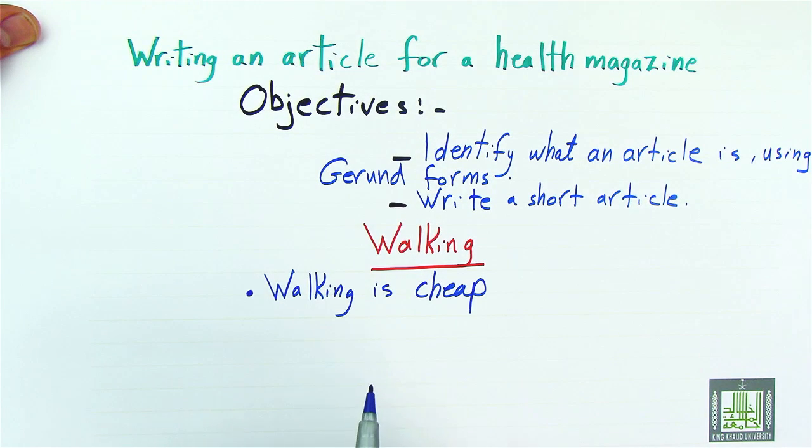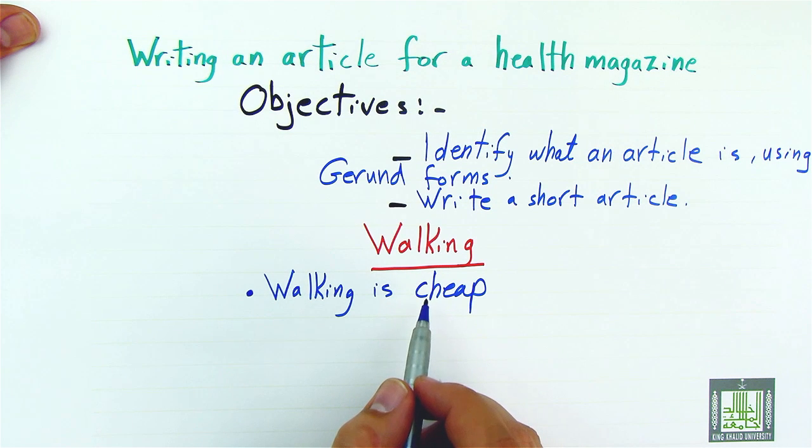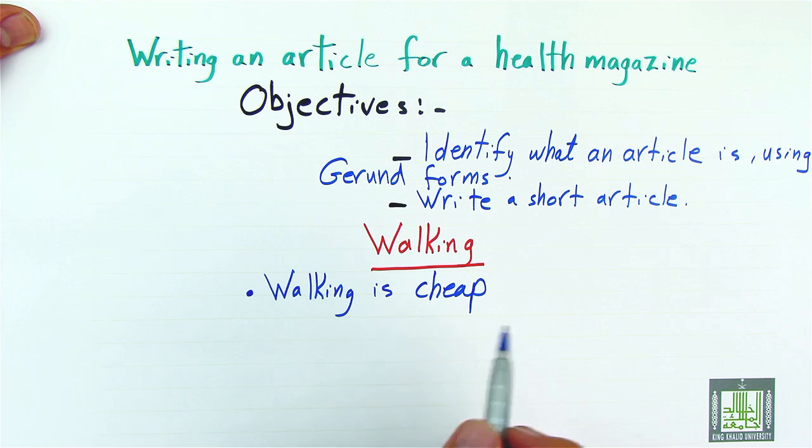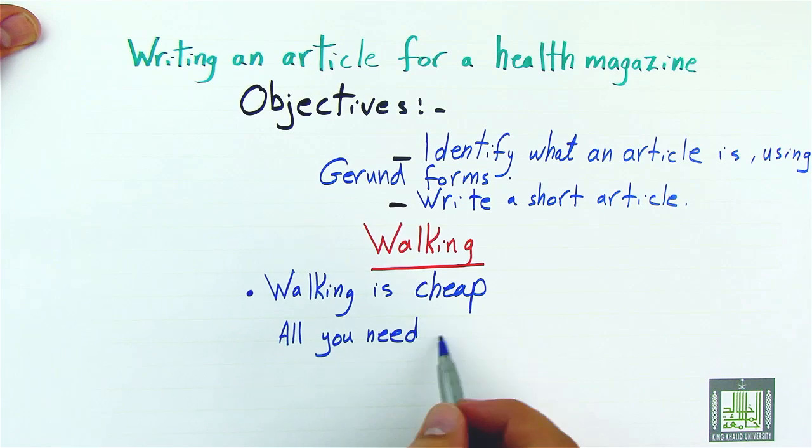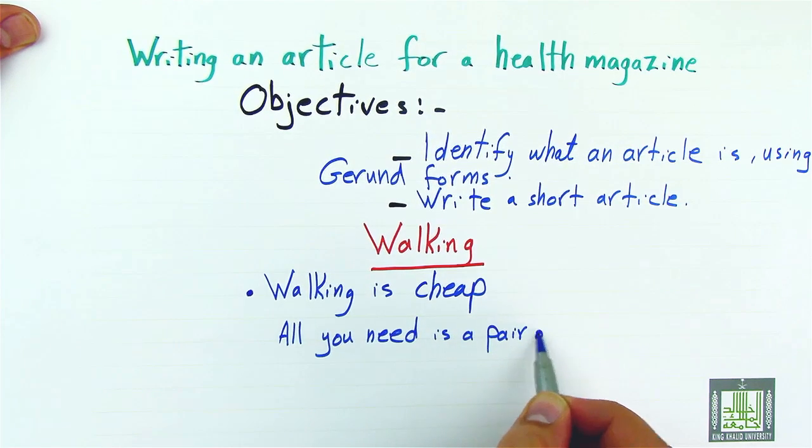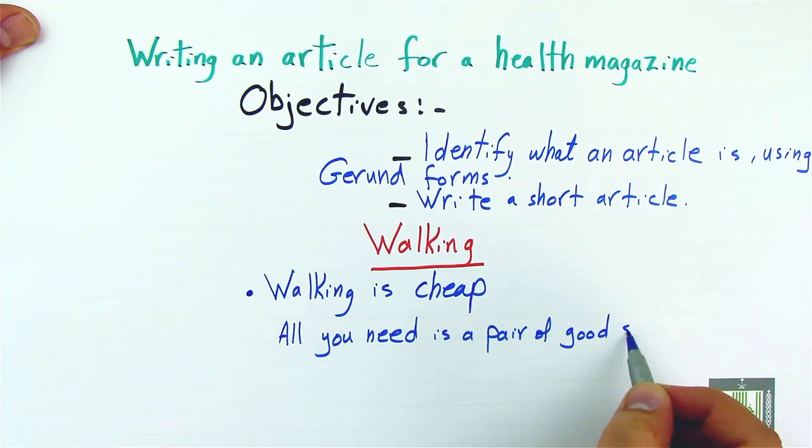This is the main idea. Now we want to explain why or how walking is cheap, so we give a supporting idea. The supporting idea is all you need is a pair of good shoes.